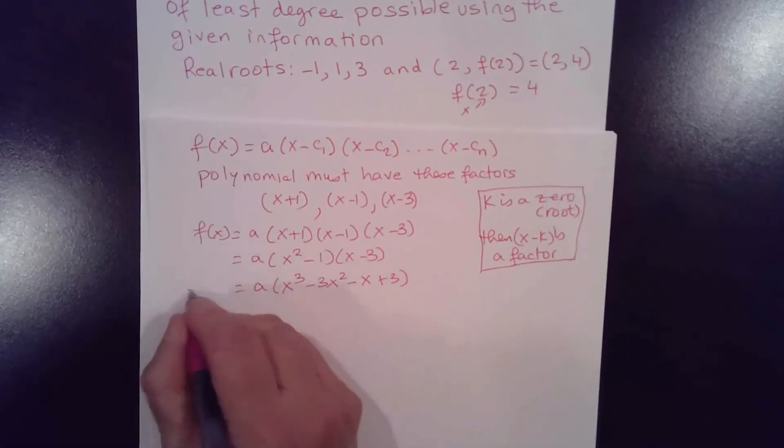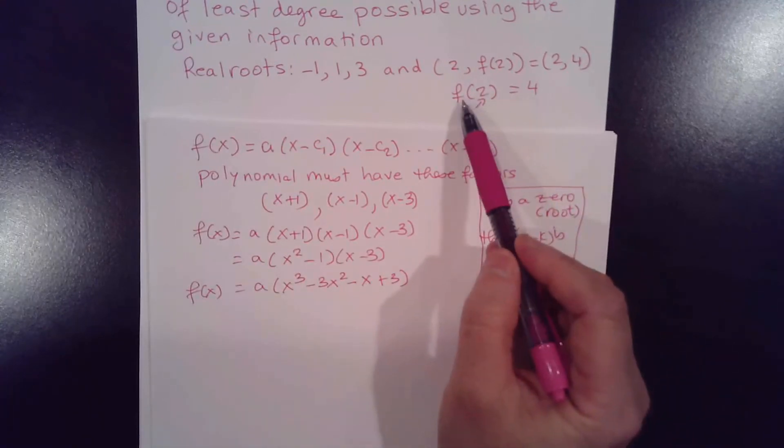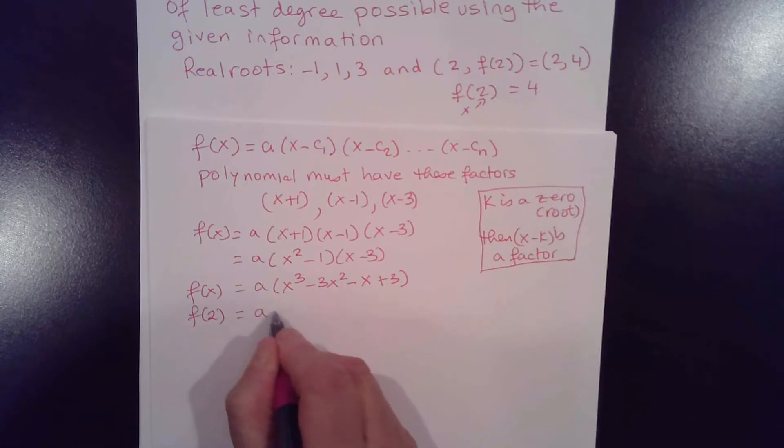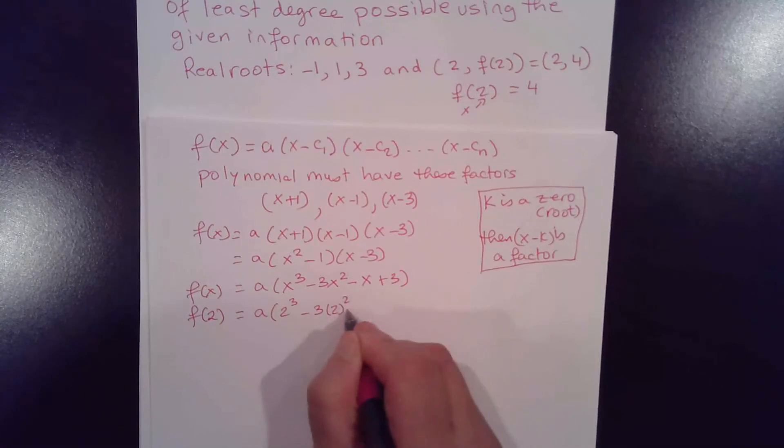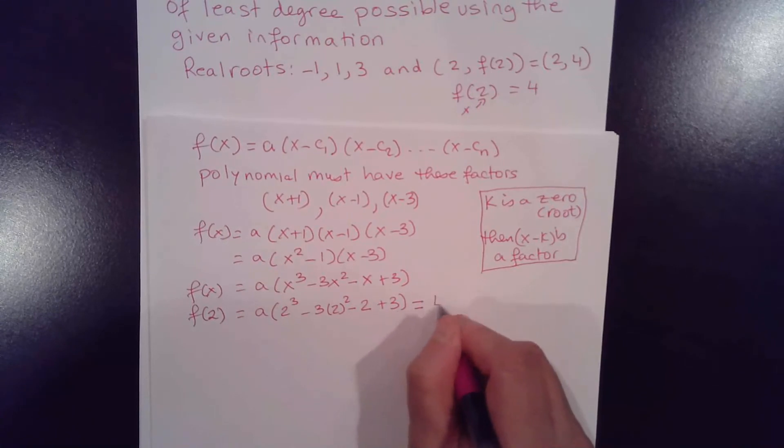So now we need to find a using the initial condition, f(2) is equal to 4, so when x is 2, that will give me a. Replace x with 2, 2 cubed, minus 3 times 2 squared, minus 2 plus 3, and f of 2 is equal to 4, that means this is equal to 4.